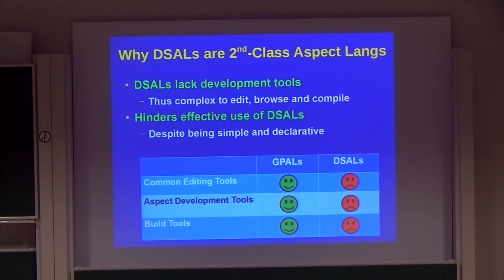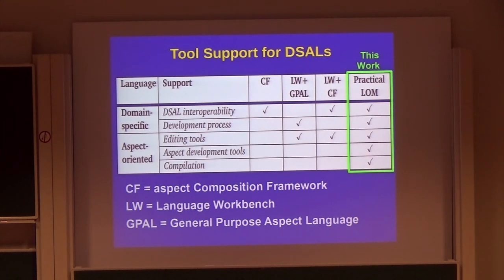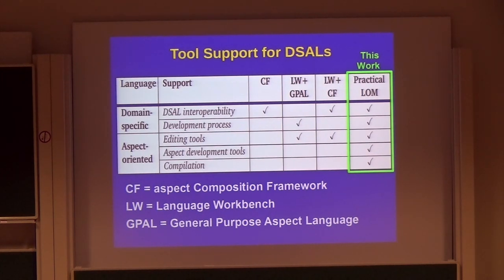By saying that DSALs are second-class aspect languages, we refer to the lack of development tools for DSALs. The lack of common editing tools such as syntax highlighting and auto-completion makes it harder to edit DSAL code. The lack of aspect development tools such as AJDT makes it harder to browse and navigate DSALs, and the lack of build tools makes them harder to compile. This lack of tools hinders the effectiveness of programming with these languages. Our options today are limited: composition frameworks only address weaving semantics but don't provide an efficient process or development tools, and language workbenches with composition frameworks are possible but remain complicated.